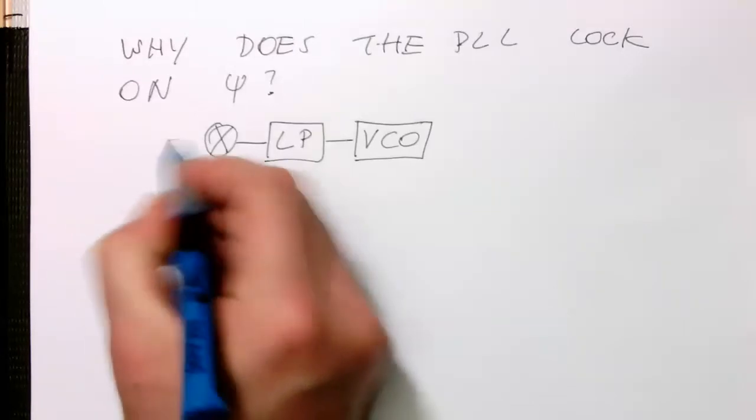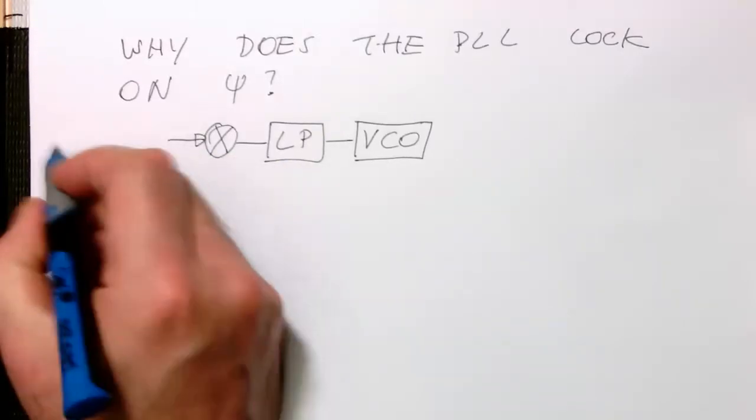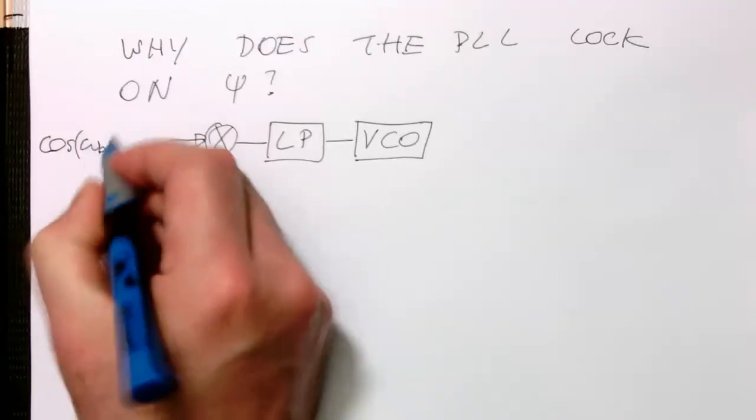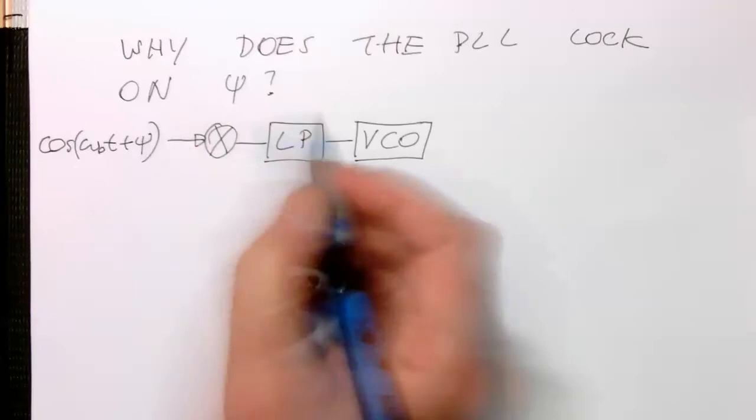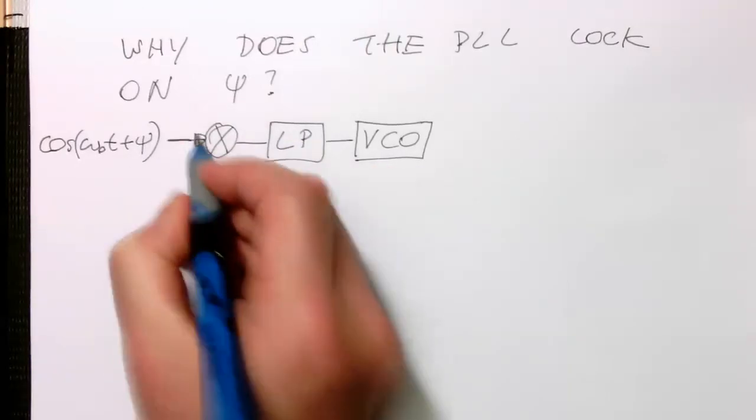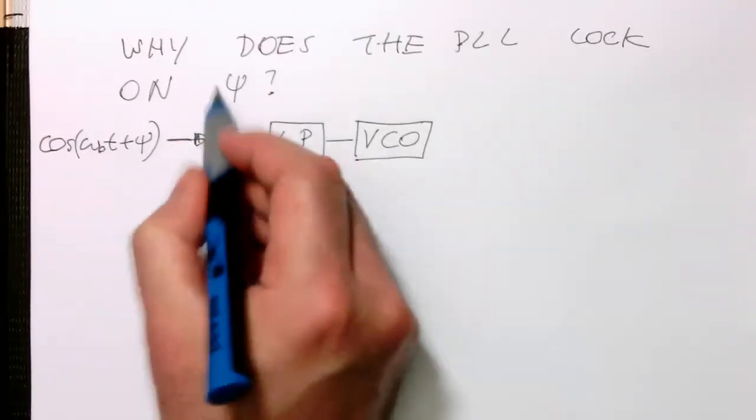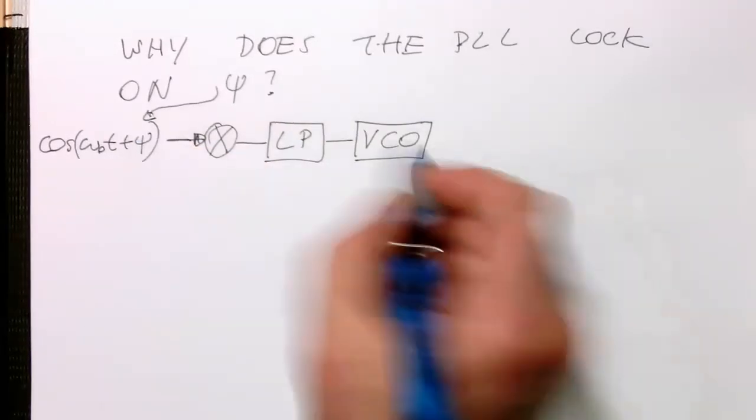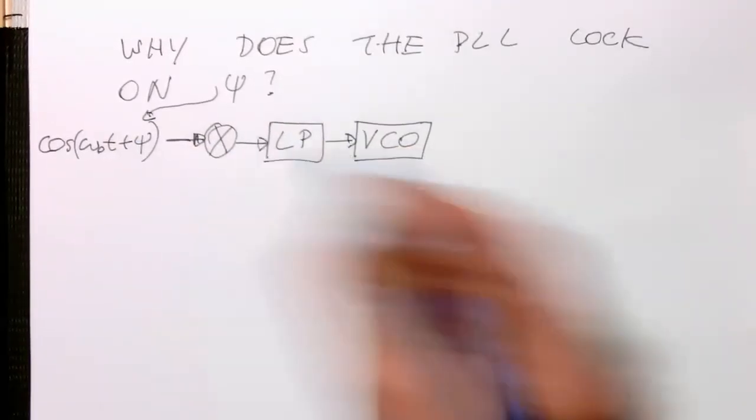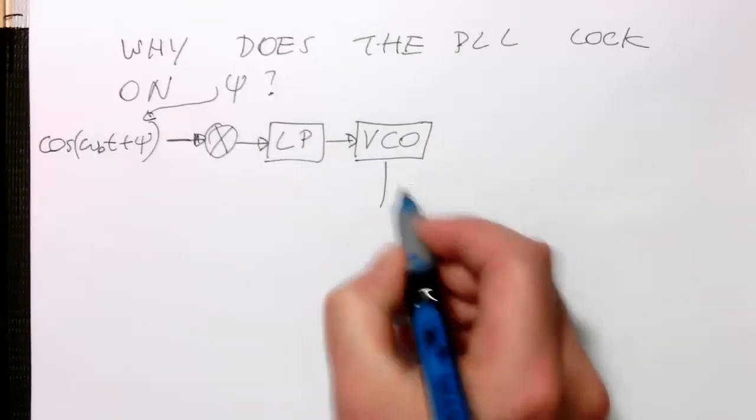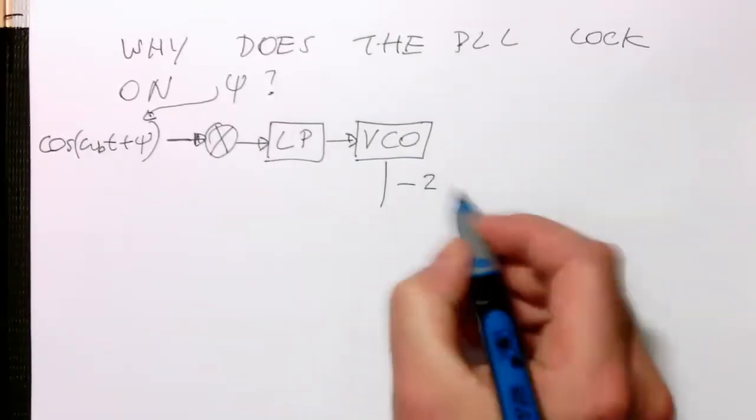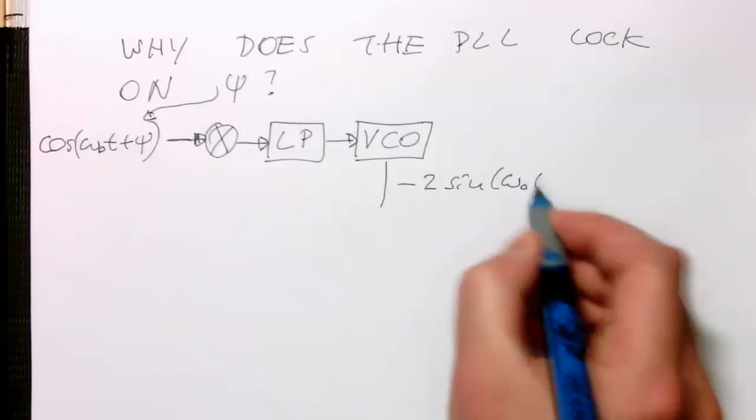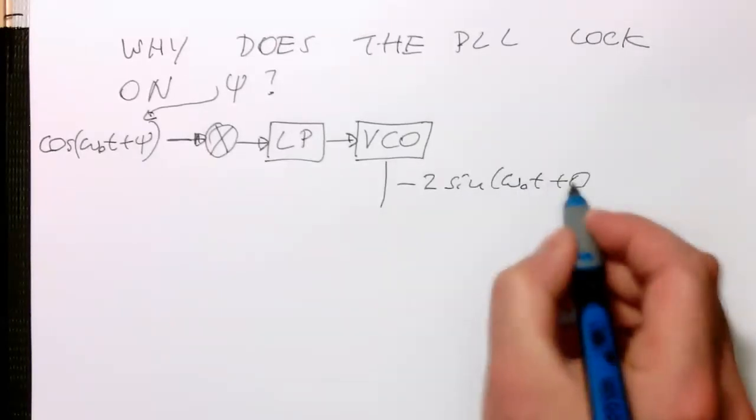And so our input signal here is cosine of omega zero T plus psi. So that's our input phase here, psi. And let's draw a couple of arrows here. And so the VCO generates this output here minus 2 sine of omega zero T plus theta zero.